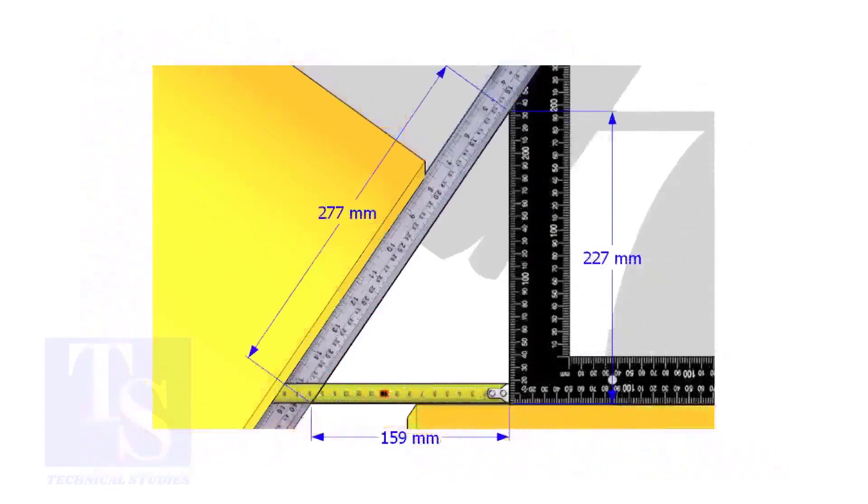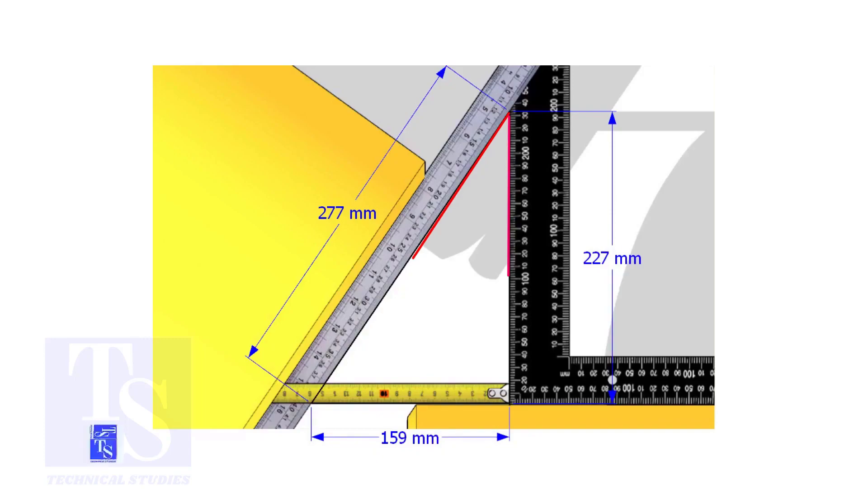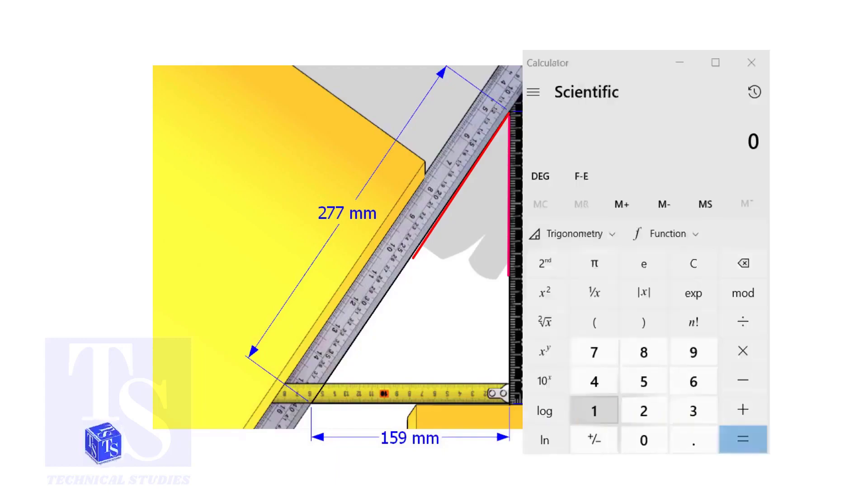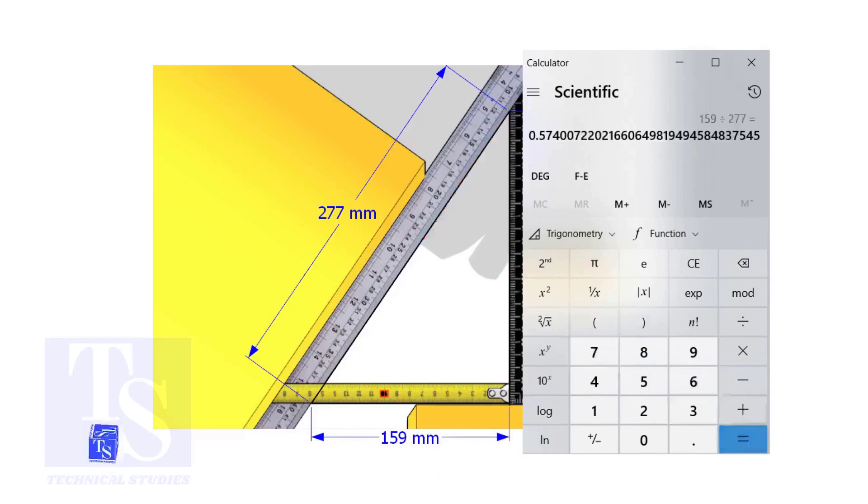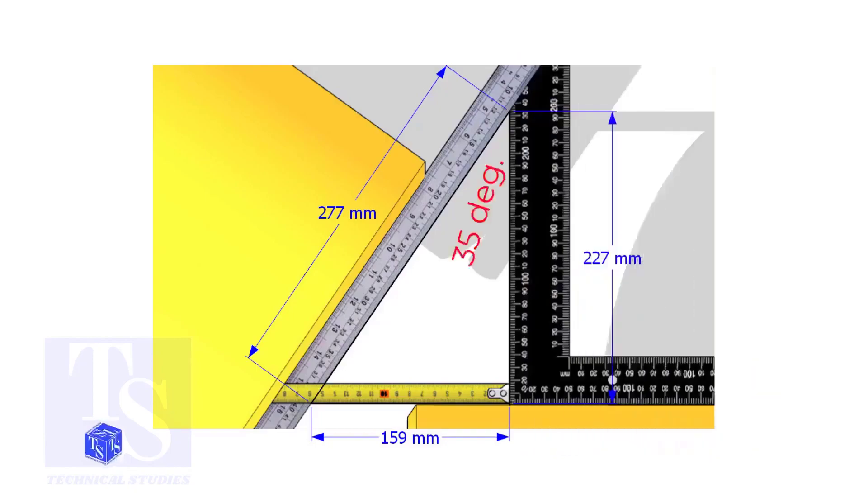Assume that these are the dimensions. Let us calculate the including angle. If you apply the sine rule, the angle will be 159 divided by 277, shift sine. So the answer is 35 degrees.